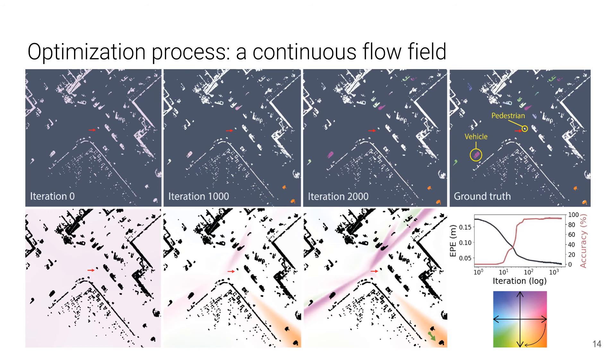The continuous scene flow field allows us to recover an estimated flow vector assembled at any location in a 3D space.